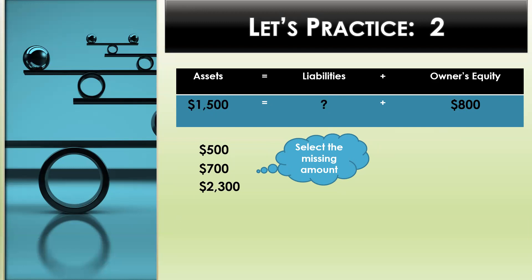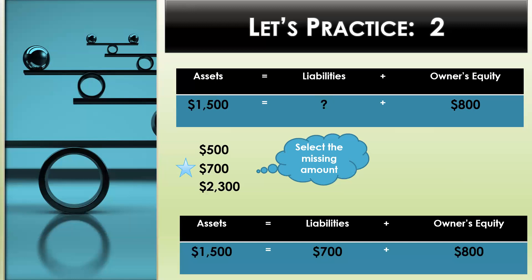In this practice problem, assets equal $1,500, and we need to select the missing amount, which appears under liabilities. We are given the amount of $800 under owner's equity. So we can ask ourselves, what amount plus $800 equals $1,500? If you selected $700, you are correct. The missing amount under liabilities is $700. We know that because $700 plus $800 equals $1,500, which keeps our accounting equation in balance.